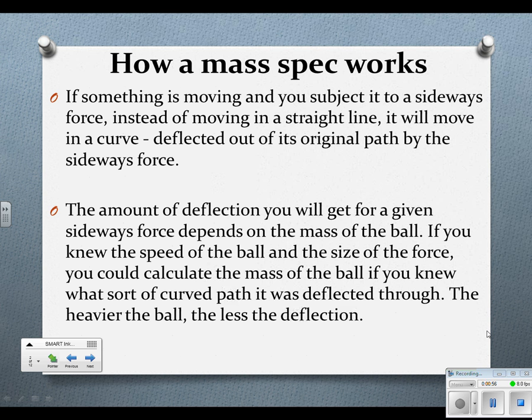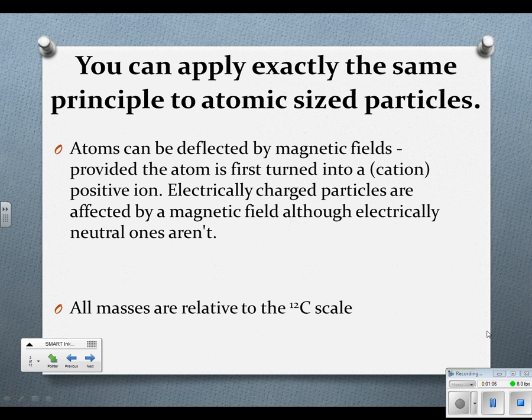Knowing the speed of the ball and the size of the force that you hit it with, there are calculations you could do to find the mass of the ball. This machine does that for us. So it takes the same concept and applies it to atomic sized particles. Atoms can be deflected because we can make them positively charged and we use a magnet as our force. So the magnet is going to attract the cations.